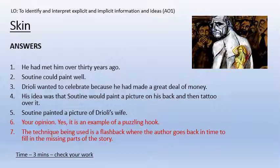And here are the answers. He had met him over 30 years ago. Soutine could paint well. Drioli wanted to celebrate because he had made a great deal of money. His idea was that Soutine would paint a picture on his back and then tattoo over it. Soutine painted a picture of Drioli's wife. Yes, it is an example of a puzzling hook - we wonder what's going to happen, very specifically wondering about one specific thing. The technique being used is a flashback, where the author goes back in time to fill in the missing parts of the story.